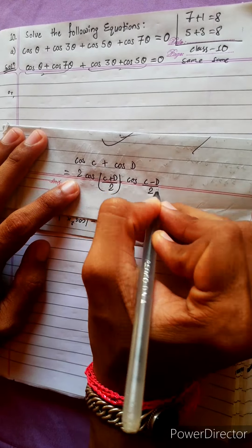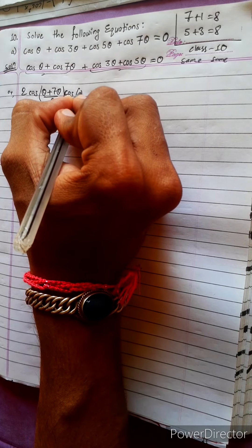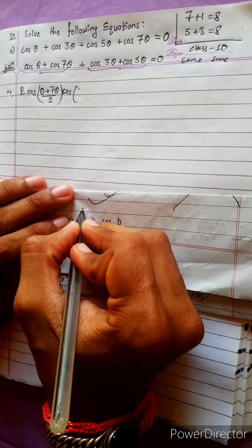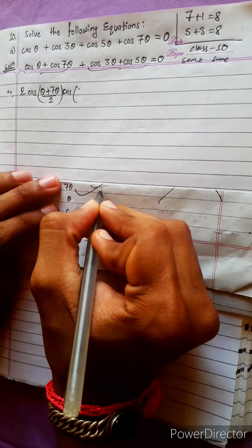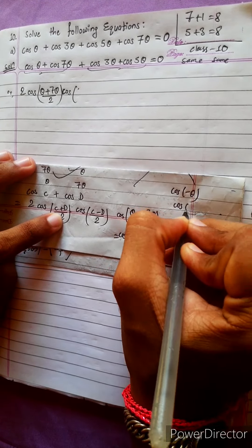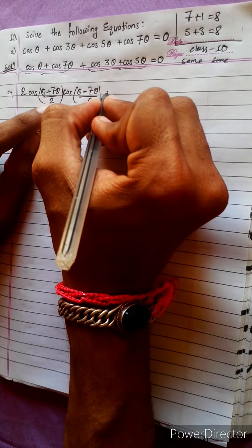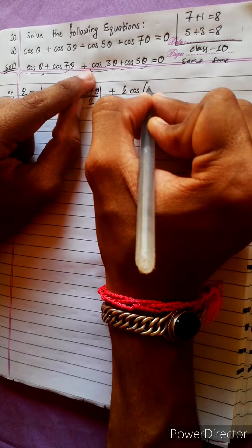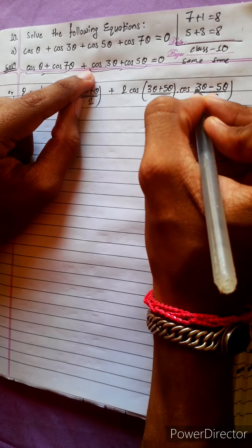Applying the formula: for cos θ + cos 7θ, we get 2cos((θ+7θ)/2)·cos((θ−7θ)/2). Since 7 plus 1 is 8, that gives 2cos(4θ)·cos(−3θ). For cos 3θ + cos 5θ, similarly 5 plus 3 is 8, giving 2cos(4θ)·cos(−θ). Note that cos(−θ) = cos θ, so cos(−3θ) = cos 3θ.